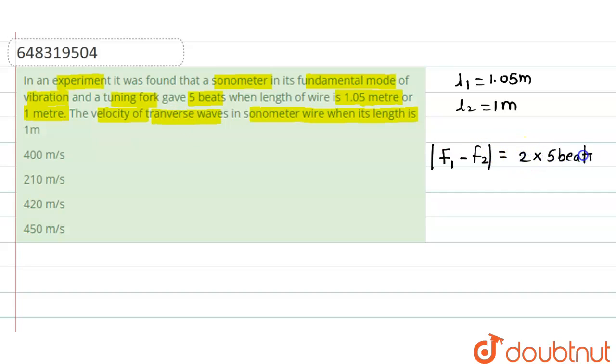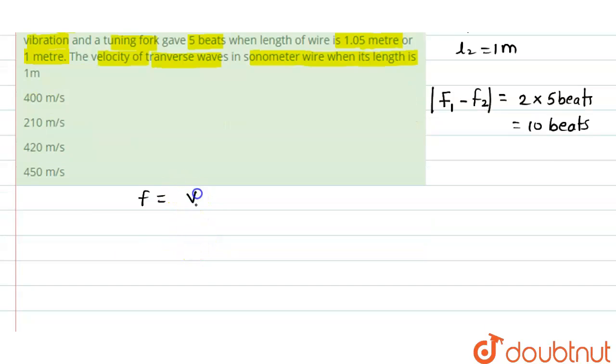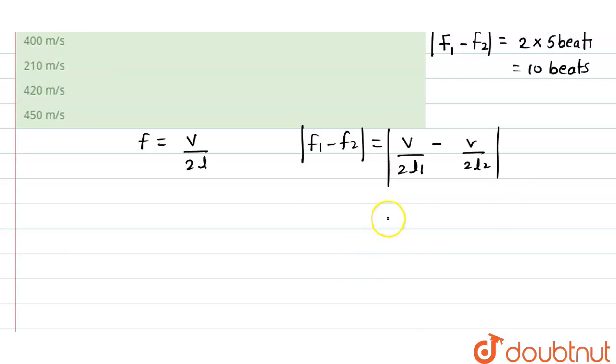The expression for fundamental frequency of the sonometer wire is v divided by 2l. So f1 minus f2 will be equal to v divided by 2l1 minus v divided by 2l2, and it is mod of this.